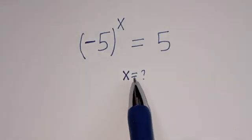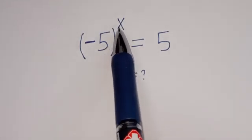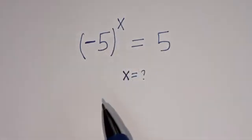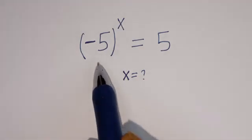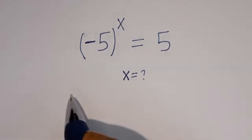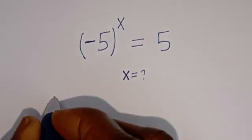Hello. How to solve for s in this problem: minus 5 to the power of s is equal to 5. In this equation, we are going to make use of two methods. Now, let's consider the first method.